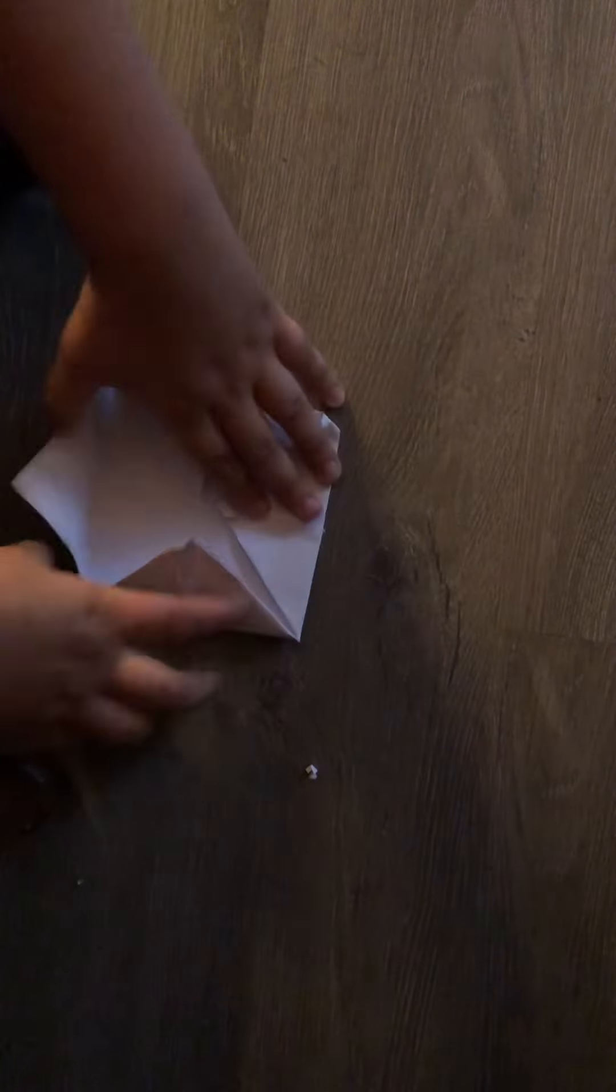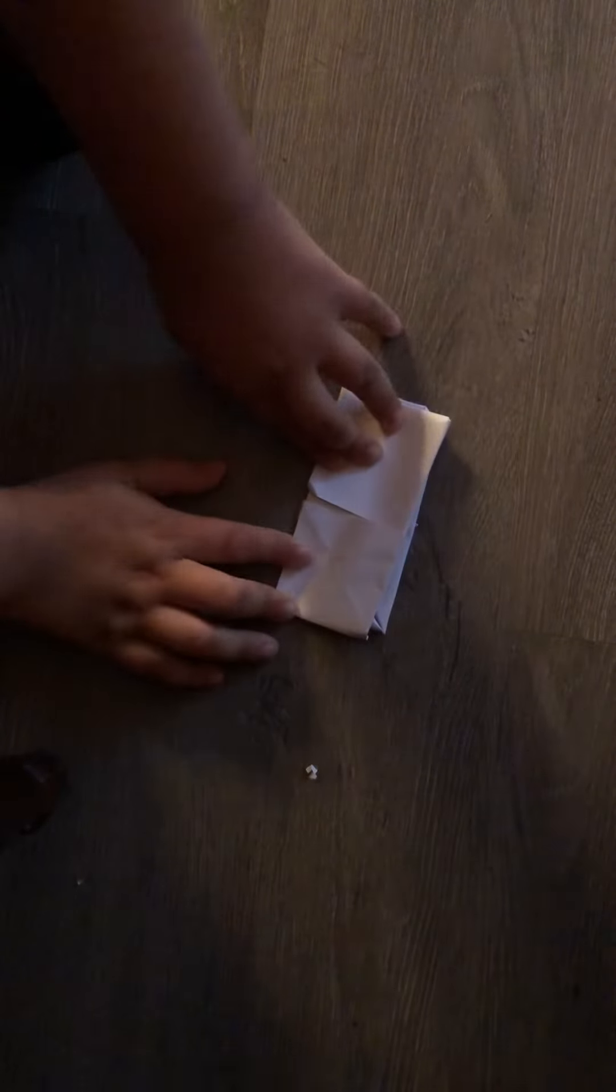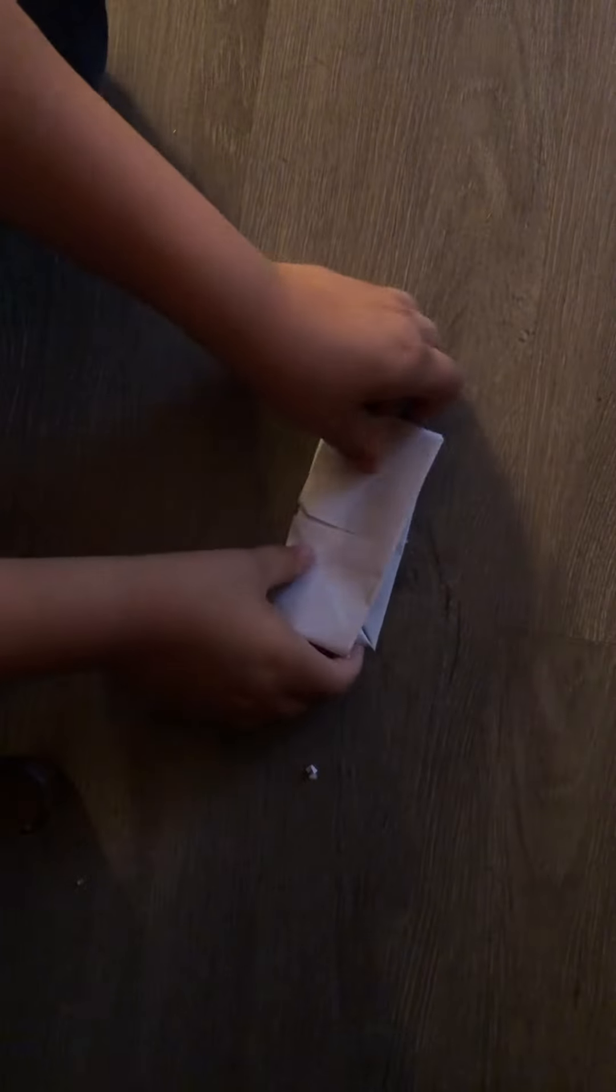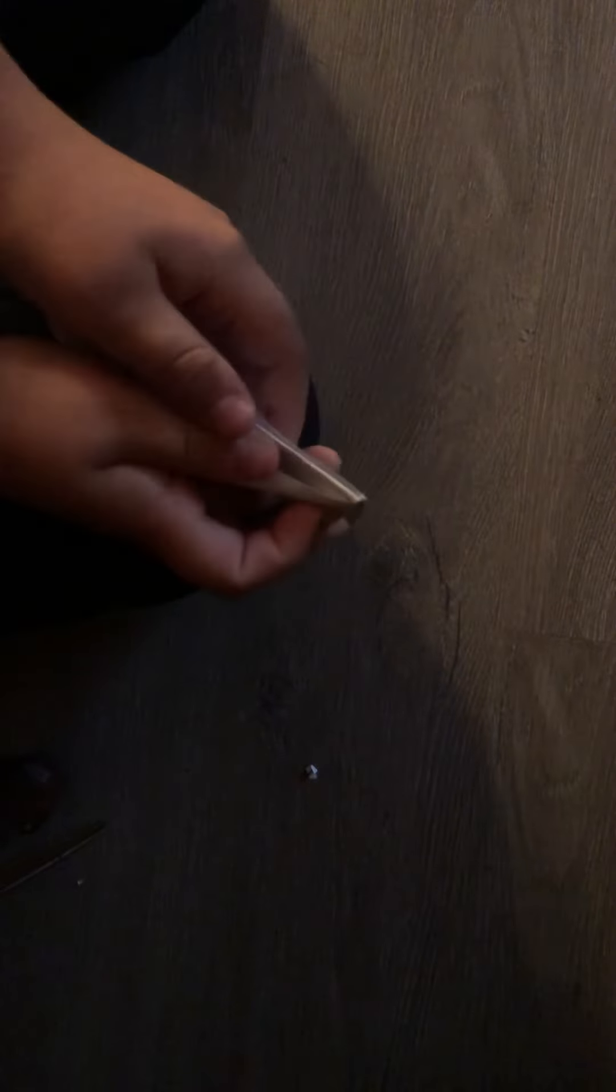Then what you're going to do is make it become half, like this. And then do that. Then you can see there's tiny little pockets like this. You're going to put your fingers in there on both of them.